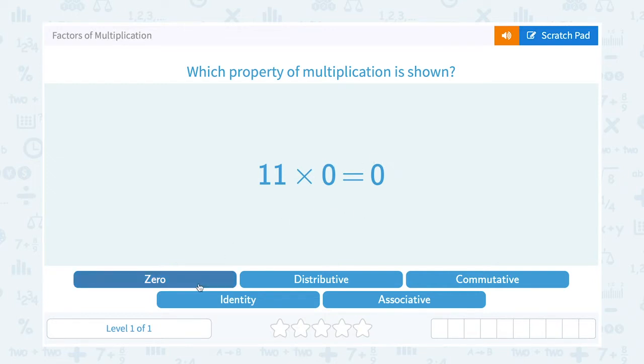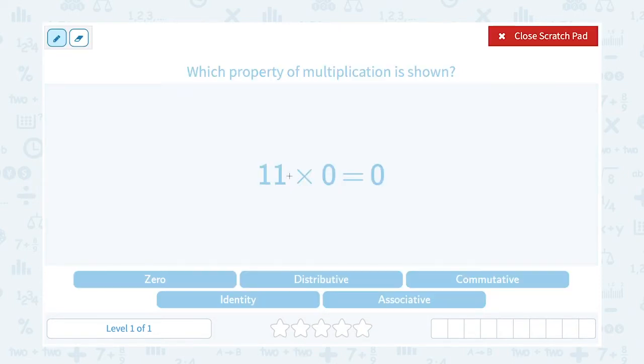And we want to say, is that the zero, distributive, commutative, identity, or associative property? Well, notice they're multiplying 11 times 0, and our answer is that that's equal to 0. This would be an example of our zero property of multiplication.